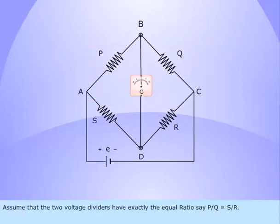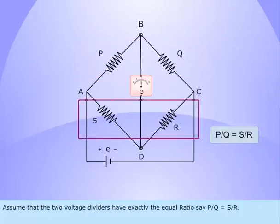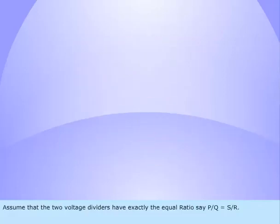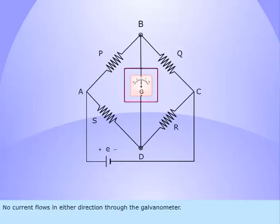Assume that the two voltage dividers have exactly the equal ratio, say P by Q equals S by R. Under this condition terminals B and D will be at the same potential. Then the bridge is said to be balanced. No current flows in either direction through the galvanometer.